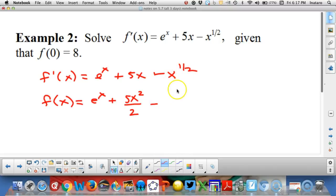The antiderivative of negative x to the 1 half would be minus 2 thirds x to the 3 halves because we add 1 to the power and divide by the new power, and then we have plus c.